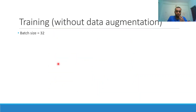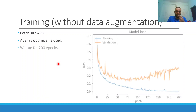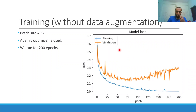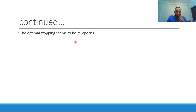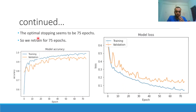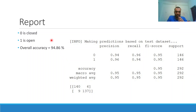Training without data augmentation uses batch size 32 with the Adam optimizer. We first train for 200 epochs and observe the loss curve — around epoch 75 the validation loss starts to increase again, indicating overfitting. So we retrain for 75 epochs as the optimal stopping point. Testing on the test set gives an overall accuracy of 94.86%. From the classification report showing precision, recall, and F1 score, and from the confusion matrix, we can see that 15 samples in total were classified incorrectly.